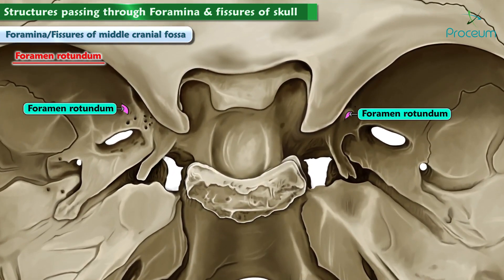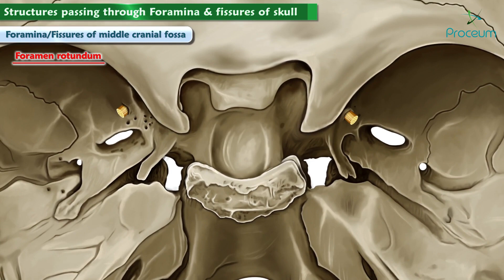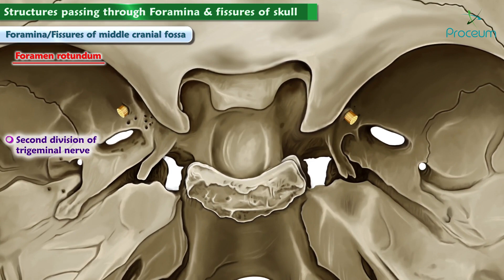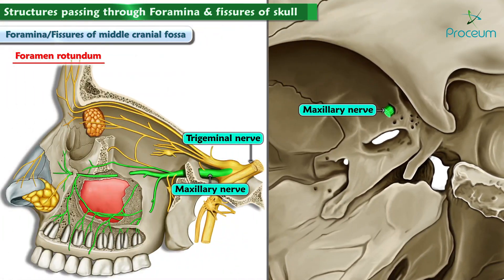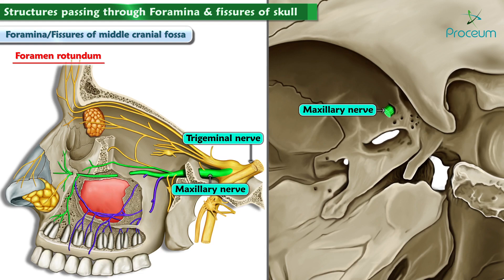Foramen rotundum allows for the passage of the second division of the trigeminal nerve, the maxillary nerve, to enter the skull carrying sensory information coming from areas of the face associated with the region under the eyes, the upper lip, or the skin overlying the maxilla bone.